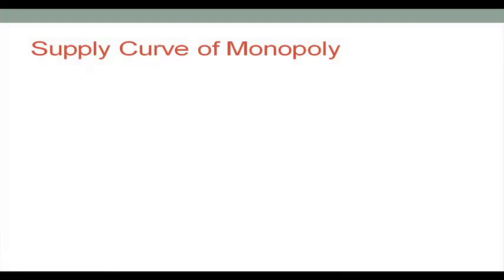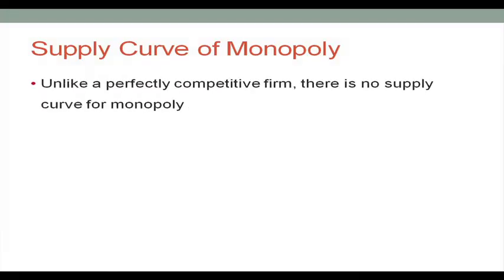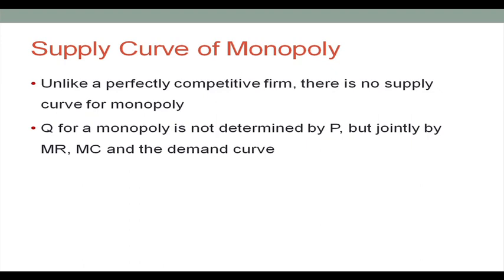Supply curve of monopoly: unlike a perfectly competitive firm, there is no supply curve for a monopoly because output for a monopoly is not determined by price alone as in the case of a perfectly competitive firm, but jointly by marginal revenue, marginal cost, and the demand curve.